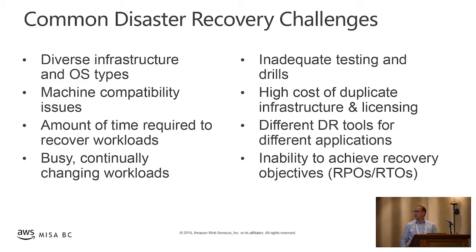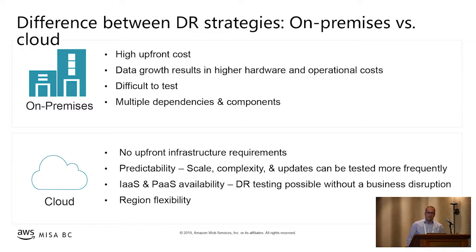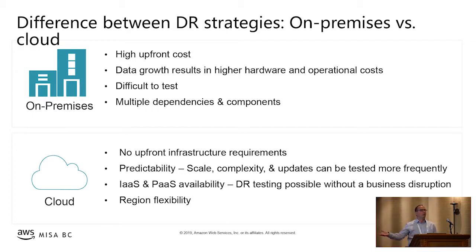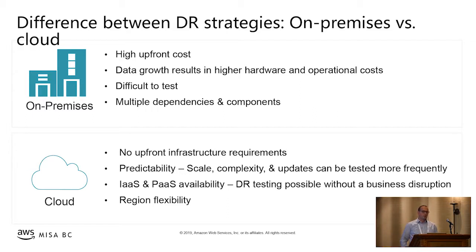The difference between DR strategies on-prem versus cloud: with AWS cloud, you sign up for an account with a zero dollar commitment. When it comes time to run infrastructure, you just launch what you need, turn it off when done, and only get billed for what you use — no upfront infrastructure requirements. Most importantly, on-prem you have vital resources just sitting there idle, whereas cloud gives you the opportunity to be much more efficient with disaster recovery.